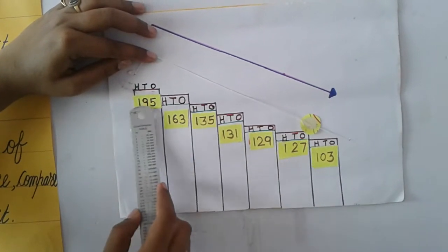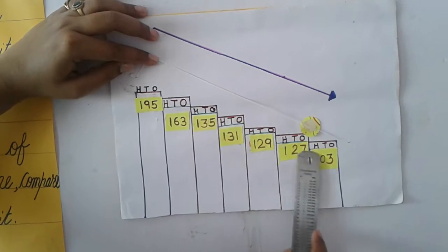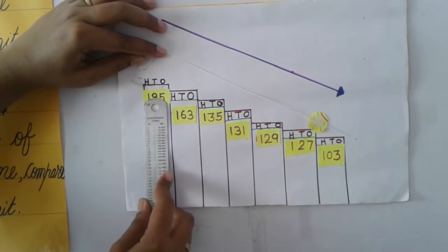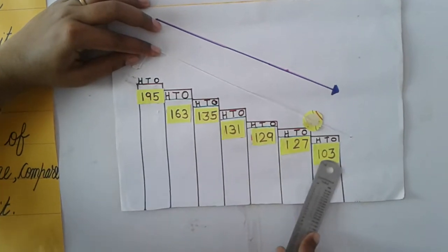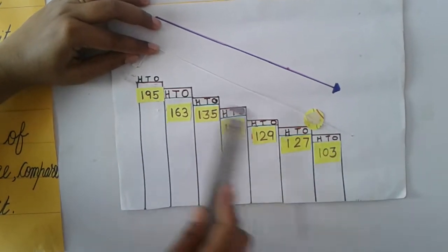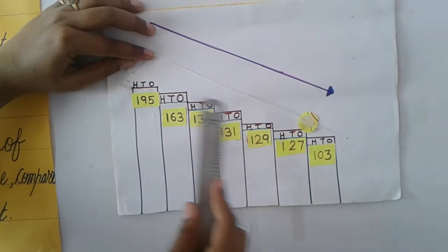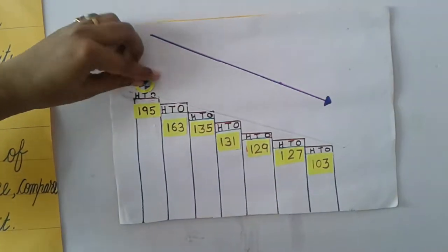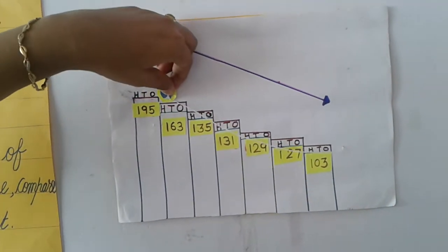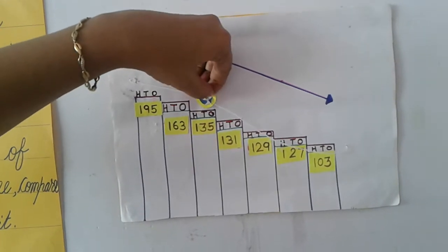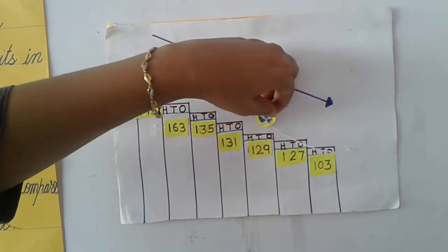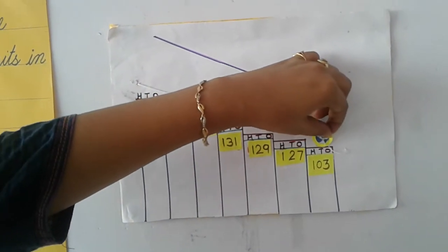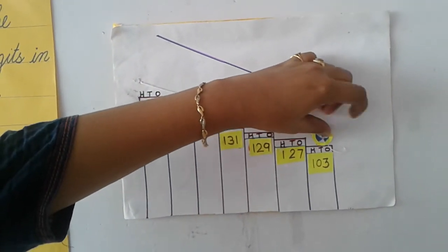So you have seen that we arranged the numbers from biggest to smallest. The biggest digit comes first and the smallest comes last. From bigger to smaller: 195, 163, 135, 131, 129, 127, and last is 103.